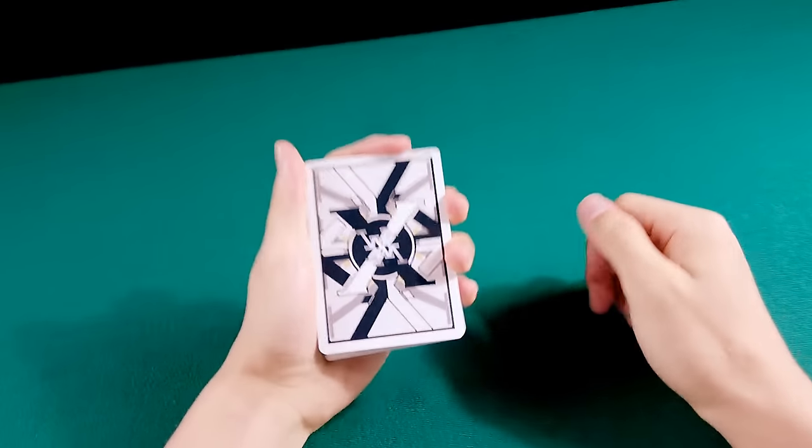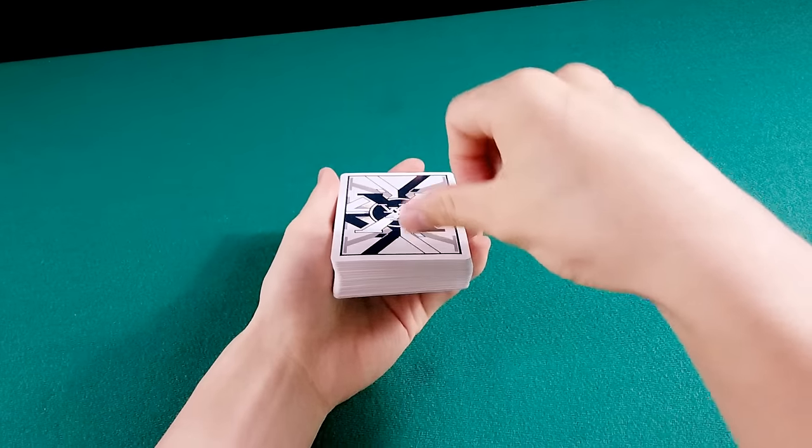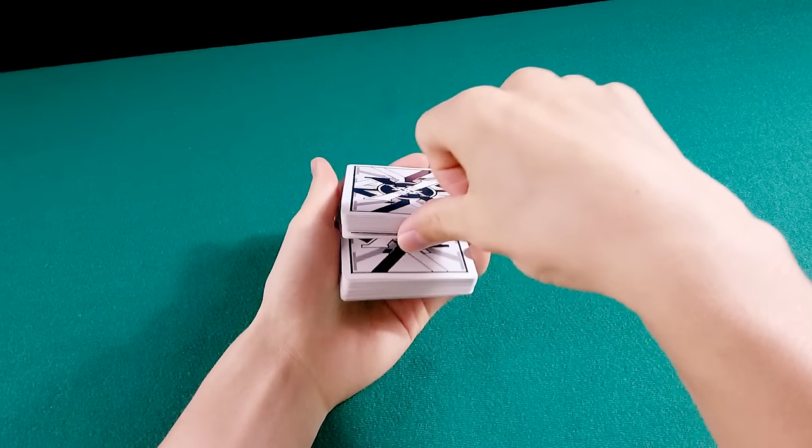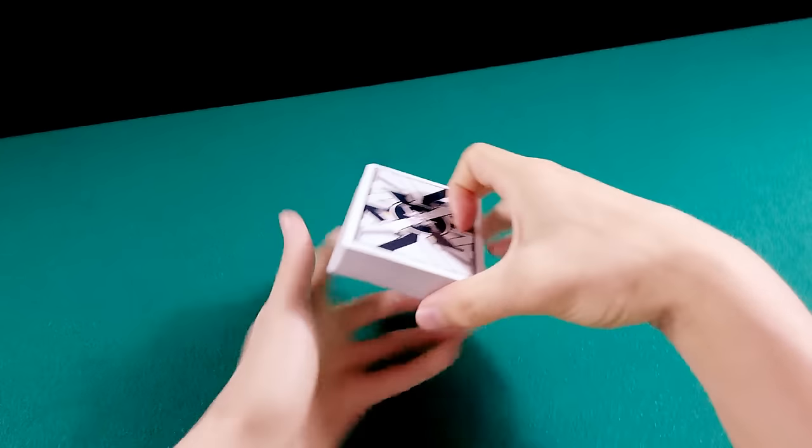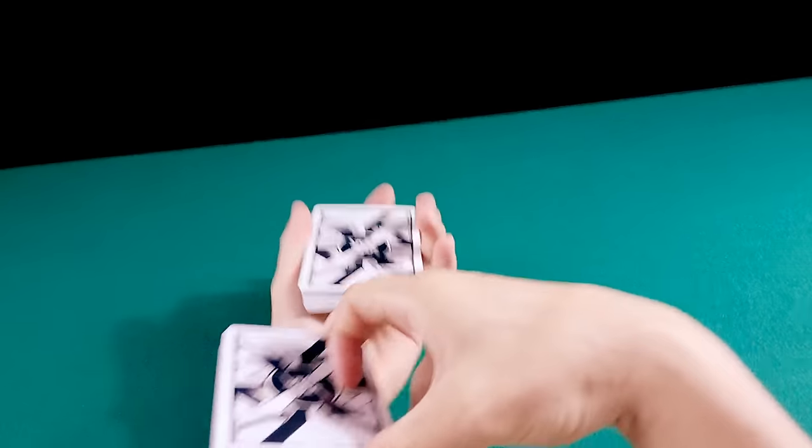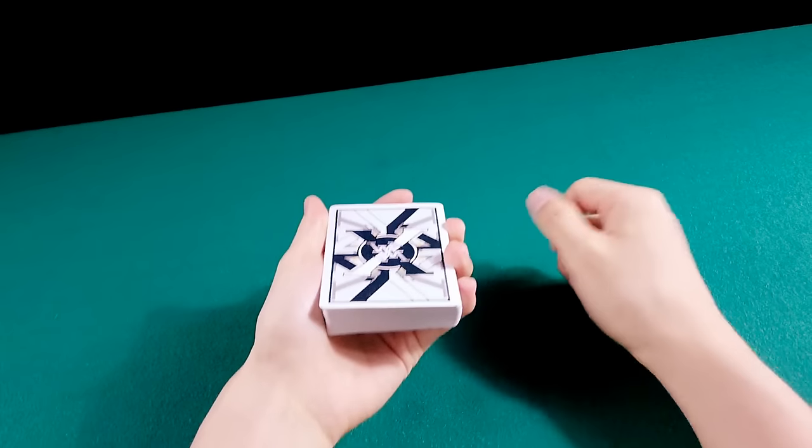Então vamos lá. Mechanics Grip. Swivel Cut é o seguinte. Você vai colocar o polegar aqui em cima. Essa é uma variação do Swivel Cut. Geralmente a gente faz aqui com o indicador desse jeito. Mas a gente vai fazer ao contrário. Com a mão direita dessa vez.